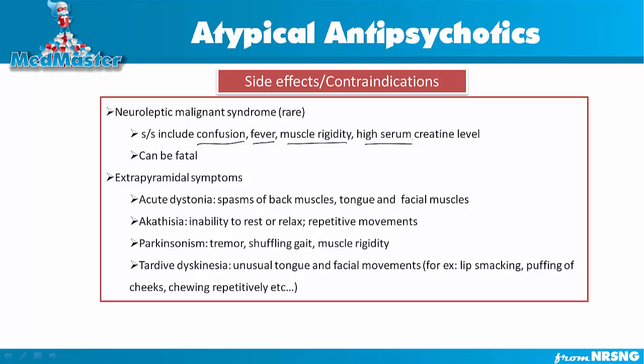Extrapyramidal symptoms are caused by blockage of dopamine receptors in the brain, since dopamine is critical for coordination and muscle movements. The first type is acute dystonia, which involves spasms of the back muscles, tongue, and facial muscles. The second is akathisia, which is an inability to rest or relax, with repetitive movements of the hands, feet, or other body parts.